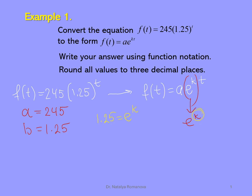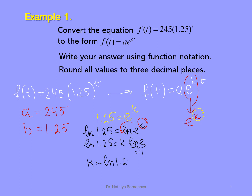Our goal is k. It is an exponential equation. We can take the natural log from both sides of our equation. ln(1.25) equals ln(e to the power of k). Now we will use the power rule: we write k before ln(e). We have ln(1.25) equals k times ln(e). Since ln(e) equals 1, we found k. k equals ln(1.25). Using a calculator, you can find this value — it would be 0.223.